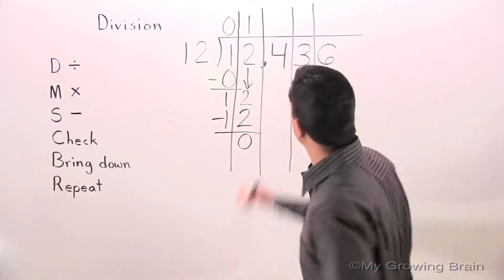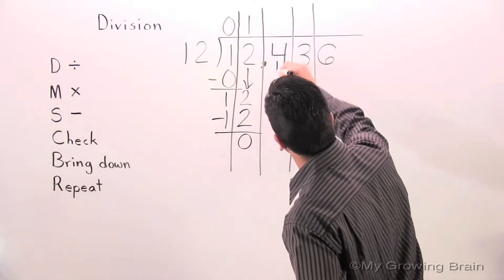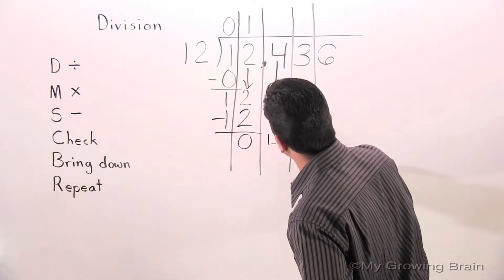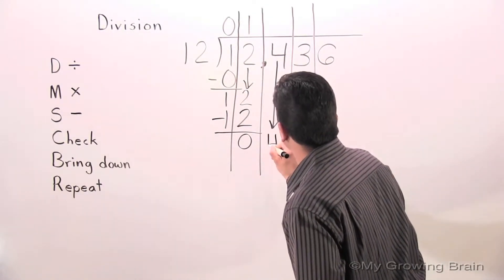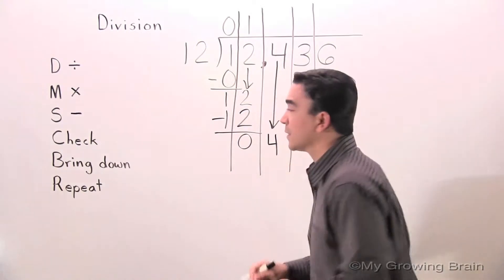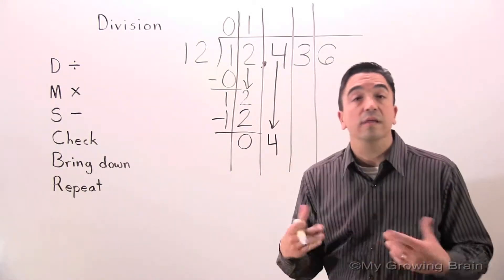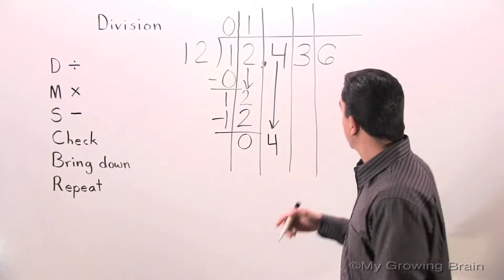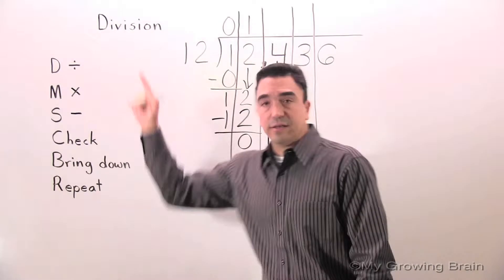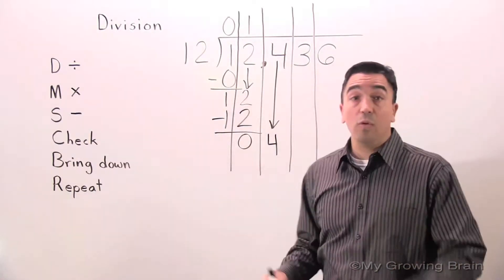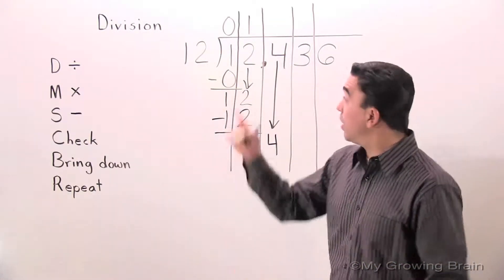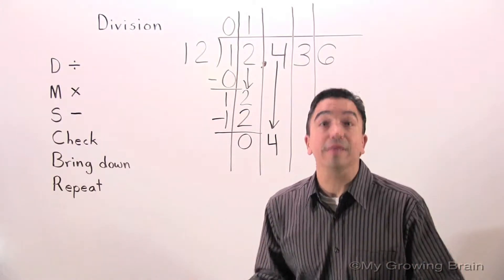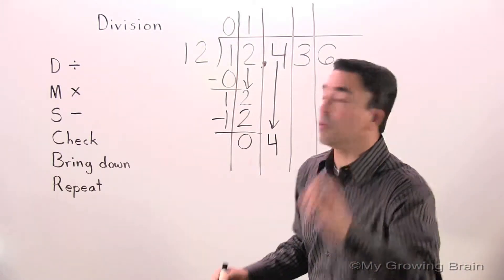Next step: Bring down. Next step: Repeat the process — back to the top. Divide. 4 divided by 12, or 12 into 4 — can't do it. Use a 0.